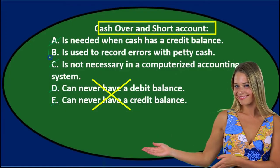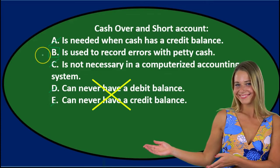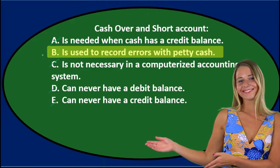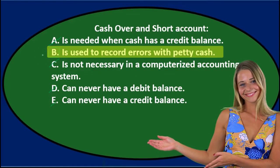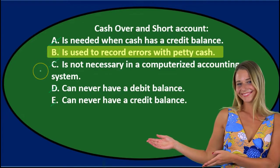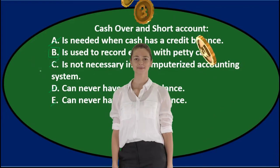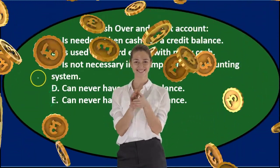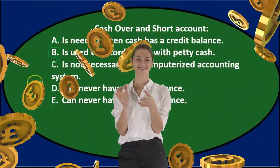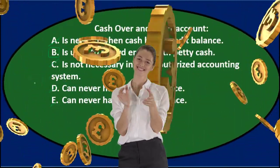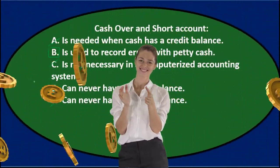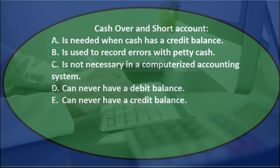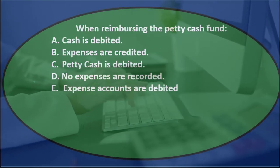That leaves us with B. The answer is: cash over and short account B — it is used to record errors with petty cash. The sales receipt is showing something different than the cash collected, so we record that difference. That means an error has occurred somewhere, either with the reporting or with the cash collection.